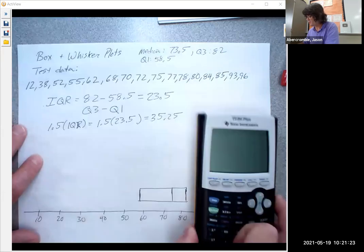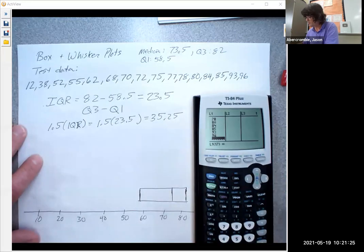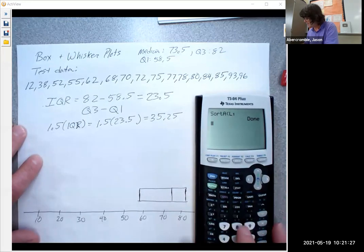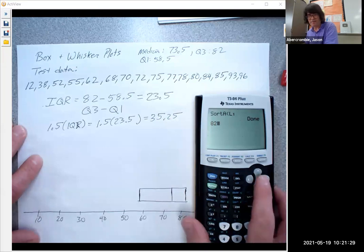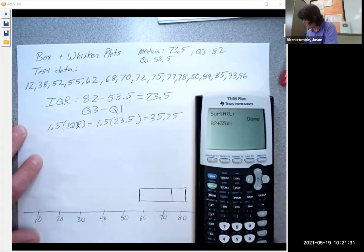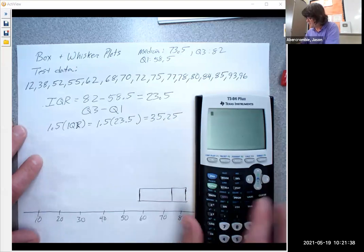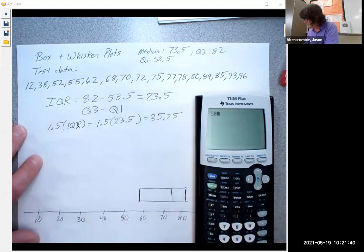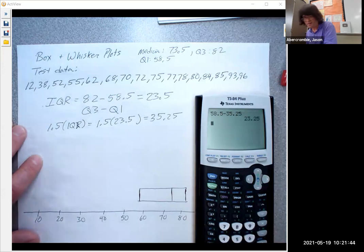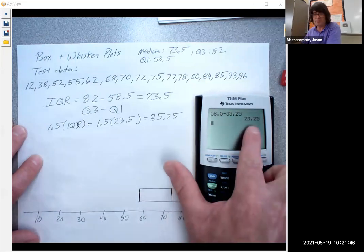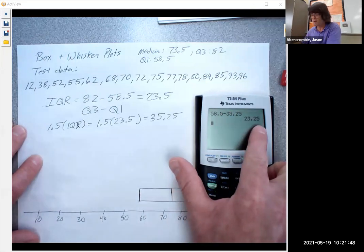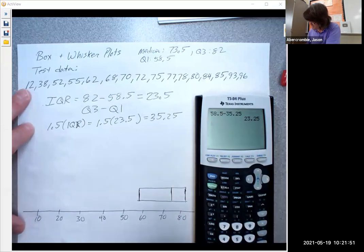Let's just, I'll just do this on my calculator real quick. If you take 82 and add 35.25, obviously this is over 100. So we're not going to have any outliers to the upside. If you take Q1, which is 58.5 and subtract 35 and a quarter, the cutoff for an outlier is 23.25. So we do have one outlier, which is 12.